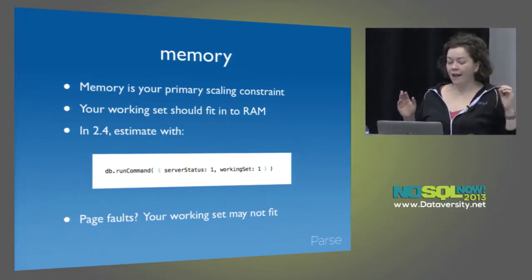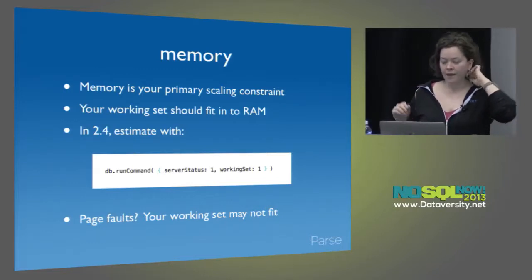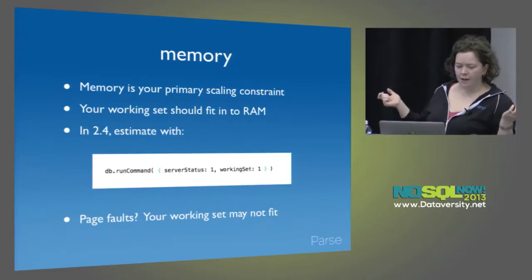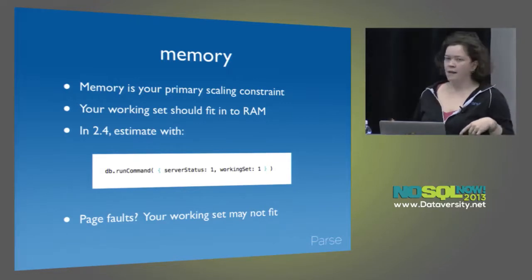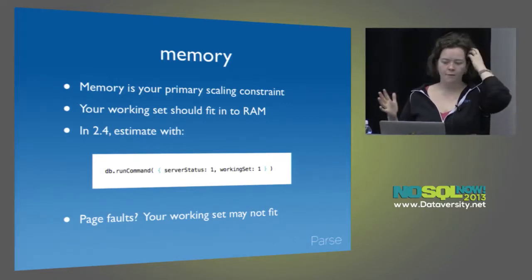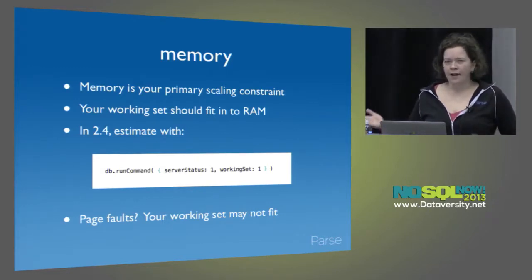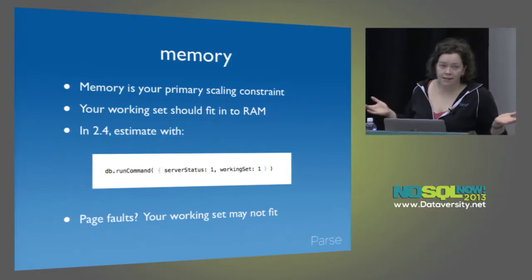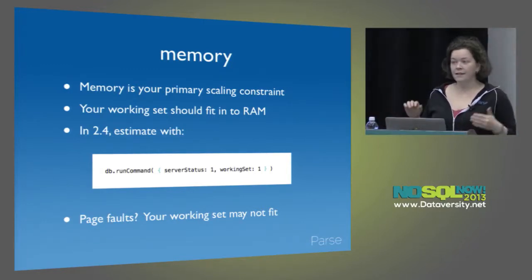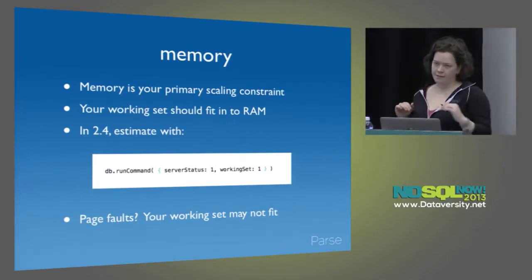In 2.4, Mongo will actually try to estimate the size of your working set for you. It doesn't show up in your default server status output for backwards compatibility reasons, but you can use a run command and it will guesstimate how big your working set is. If your performance is getting sluggish and you're seeing a lot of page faults, your working set is probably too large and you probably need more RAM. You should always keep an eye on your paging statistics over time, because they will let you know when you're getting close to a danger zone.